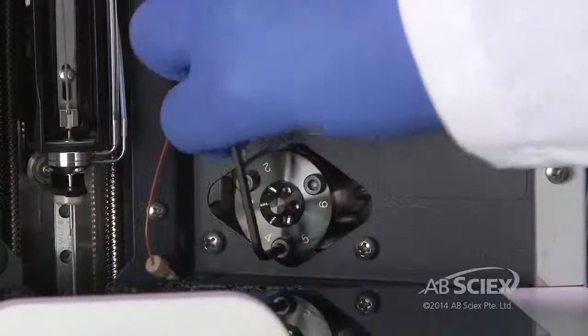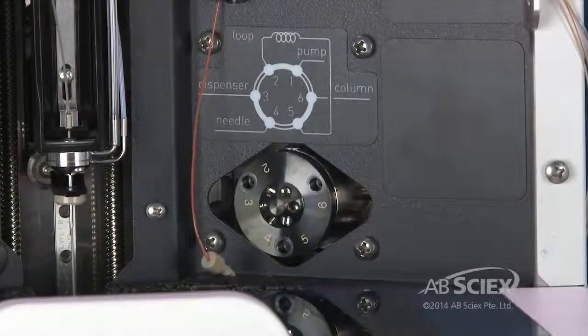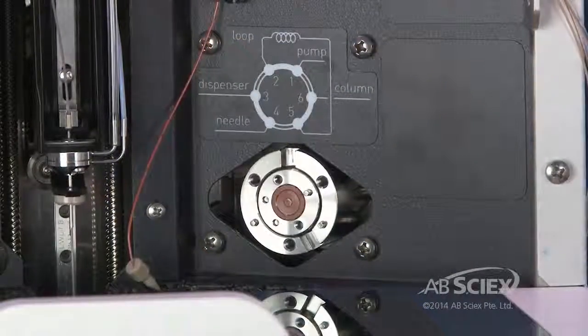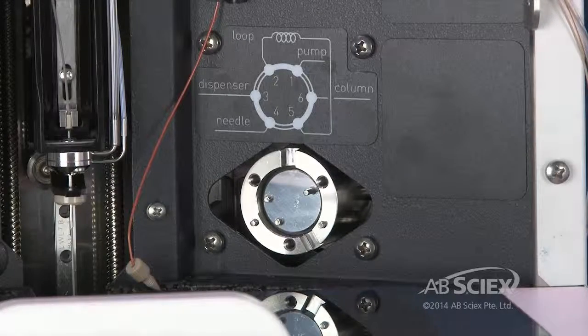Using a 3 mm hex wrench, remove the three stator bolts. Carefully remove the stator from the valve body. Carefully remove the rotor seal from the valve body.